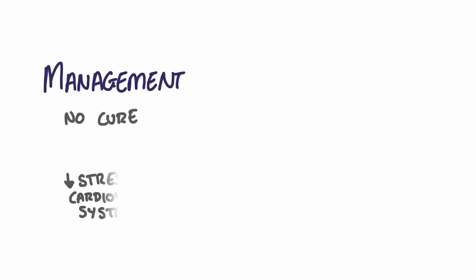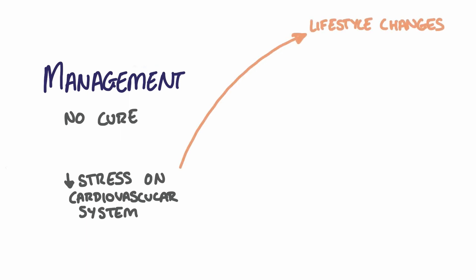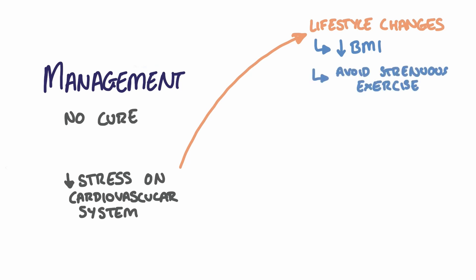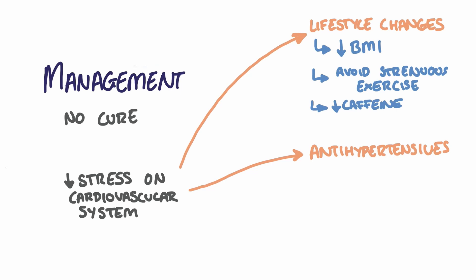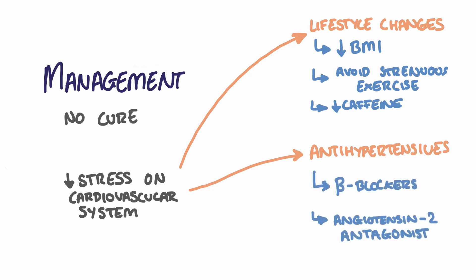There is no cure for Marfan's syndrome. Management instead aims to limit the cardiac-associated complications by reducing the stress and workload placed on the cardiovascular system. Therefore, patients are advised to make lifestyle changes such as reducing their BMI if overweight, avoiding intense exercise, and limiting the consumption of caffeine and other stimulants. Additionally, beta-blockers and angiotensin-2 receptor antagonists are prescribed to further reduce blood pressure and the strain placed on the cardiovascular system.